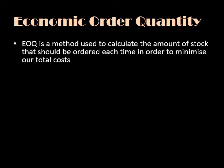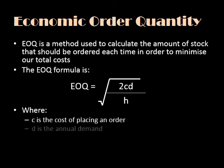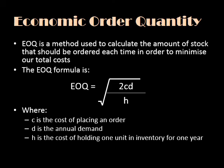Economic order quantity is a way that we use to calculate how much stock we should order each time in order to minimise our total stock holding and ordering costs. The formula is: EOQ equals the square root of 2 multiplied by C multiplied by D, divided by H. C is the cost of placing an order, D is the annual demand for that particular type of inventory, and H is the cost of holding just one unit in inventory for one year.